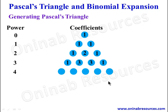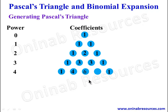For power 4, we have five terms. The first and last coefficients remain 1. The second term is 1 plus 3, which gives 4. The third term is 3 plus 3, which gives 6. The fourth term is 3 plus 1, which gives 4. So the row is 1, 4, 6, 4, 1.